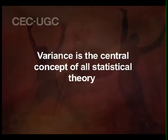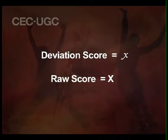Variance is the central concept of all statistical theory. In statistics, when we are collecting the data, the scores we are getting are called raw scores. But after getting the raw scores, we will take the mean, and how much the mean deviates from each score is called the deviation score. The deviation score is denoted by the lowercase Greek letter x (small x), while the raw score is denoted by capital X.